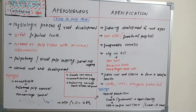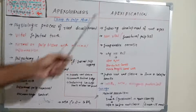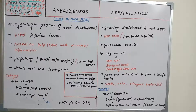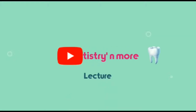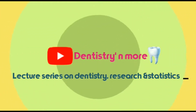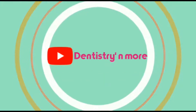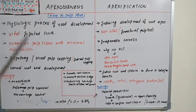Hello everyone, welcome back to a new video on dentistry and more. Today's topic is apexogenesis and apexification — the basic differences in procedure and concept. As the name suggests, apexogenesis is creation of the root end by a physiological process, and apexification is root closure by an induced method.